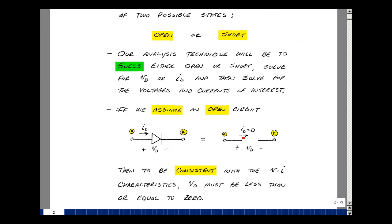If it turns out to be less than or equal to zero, then the guess you made was correct. Now, if it turns out that the voltage across here is greater than zero, then that's a contradiction, and therefore that can't be the correct model.